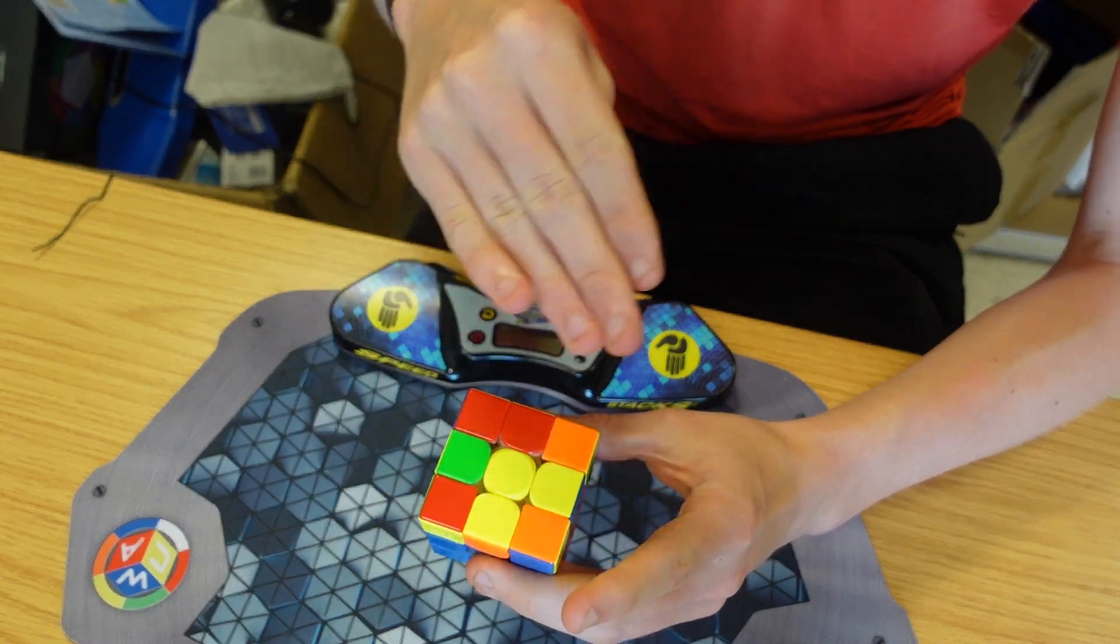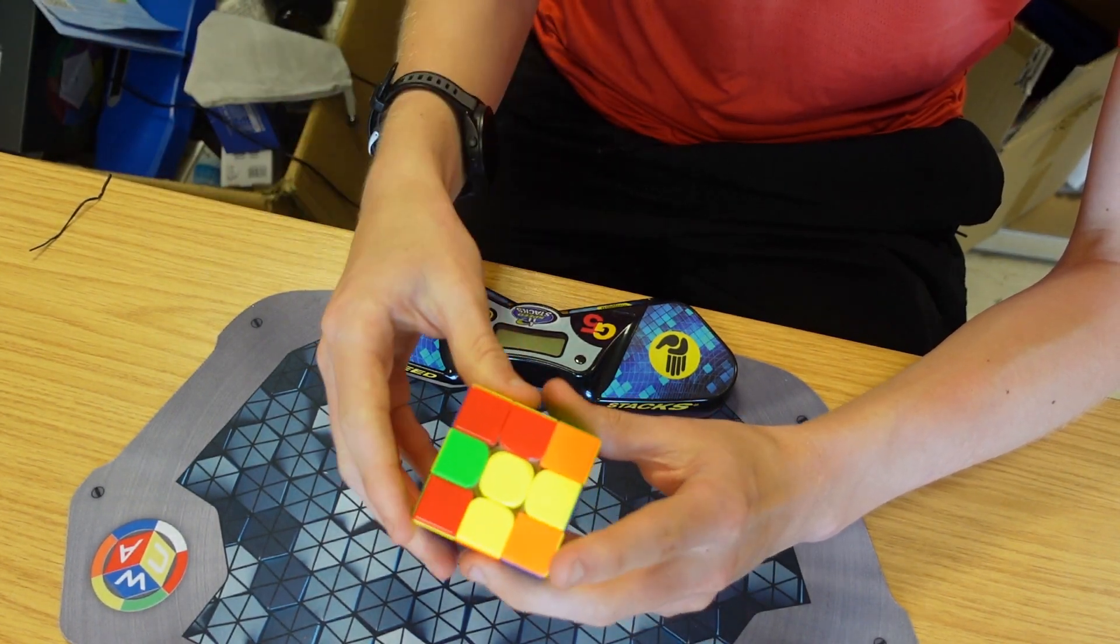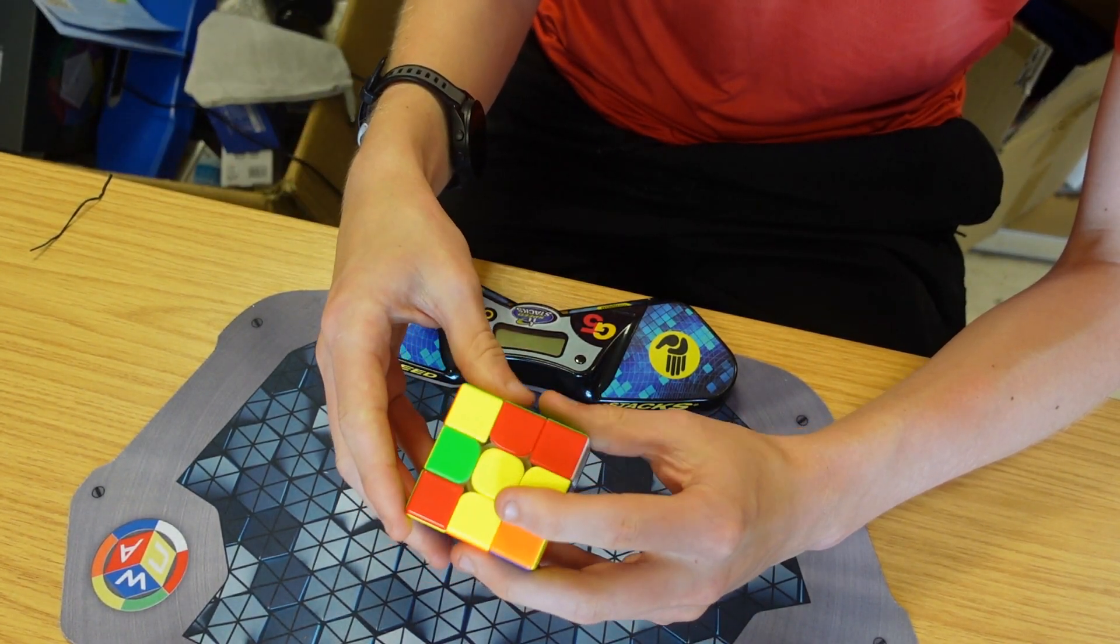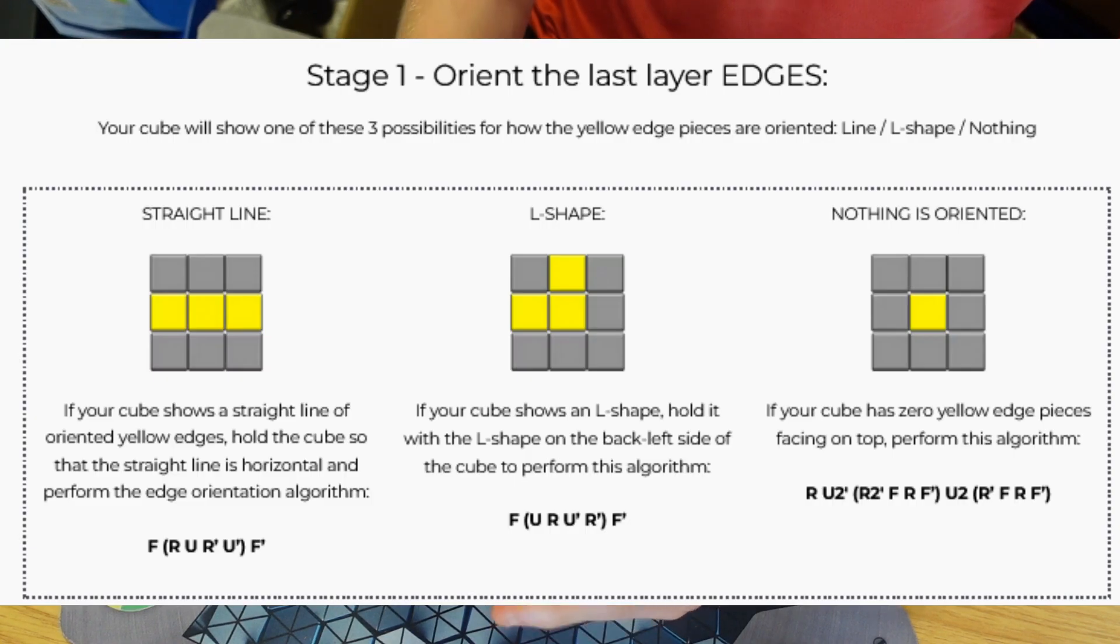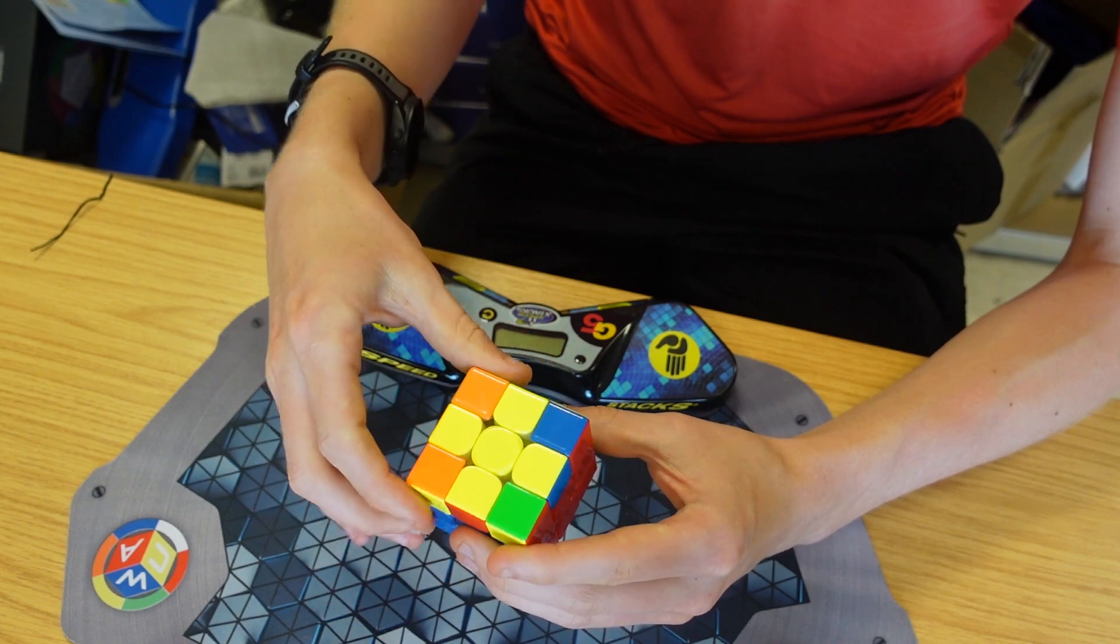Then we move on to what's called OLL. We're going to do this OLL in two looks. We're going to first solve the cross, and then we're going to do one algorithm which is going to fix all of these corners.